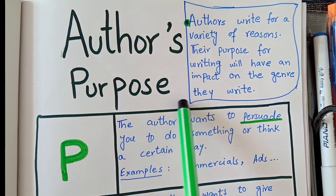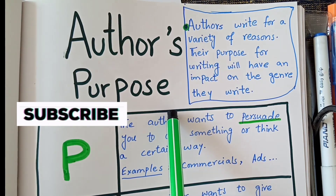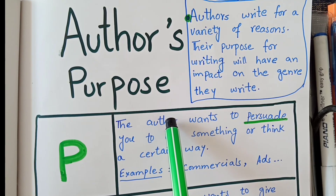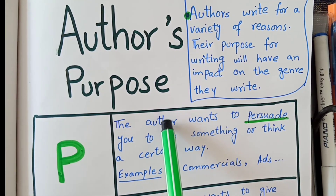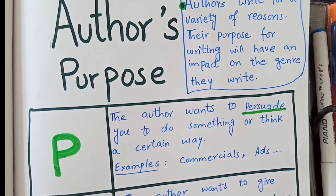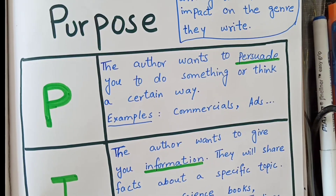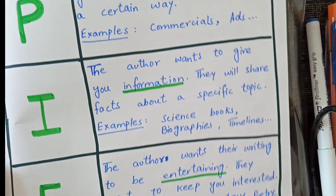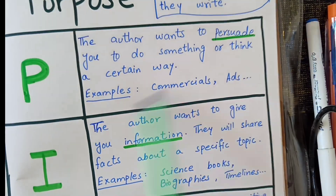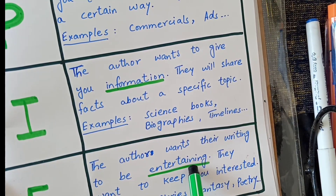Authors write for a variety of reasons and will have different kinds of writing. There are three ways to remember the purpose of their writing. The first is P, the second is I, and the third is E. P stands for persuade, I stands for inform, and E stands for entertaining.